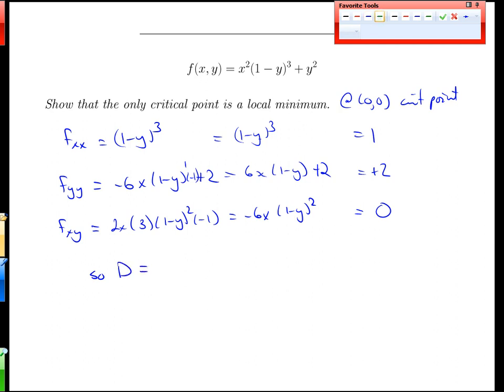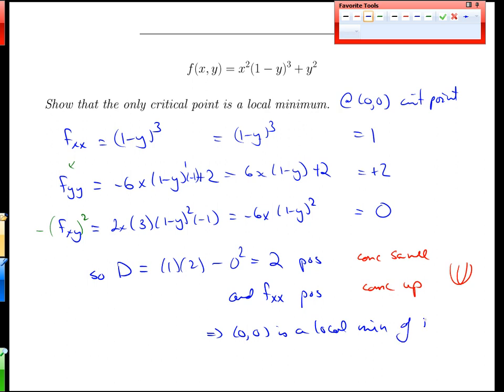What does that tell us about our discriminant value for the second derivative test? Again, we take the product of these two things. 1 times 2 minus the second derivative with x and y all squared. We get 2, which is positive. That means the concavities are the same. And also we get fxx is positive. That's concave up. So we have two concavities that are both positive, concave up. So it tells us that (0,0) is a local minimum of our function.